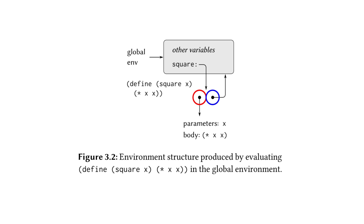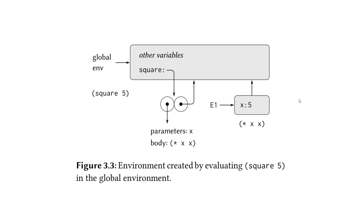The next figure shows what happens if we evaluate square when we pass it an argument of 5. All we've done is added an extra frame, which binds the value 5 to the parameter x. When this is evaluated we're going to end up with 25, and the enclosing environment for this frame is going to be the global environment.